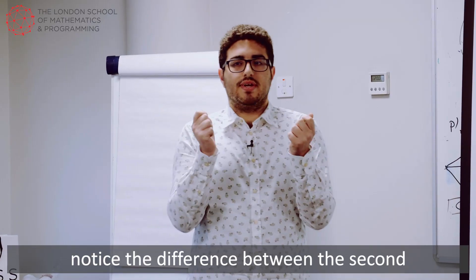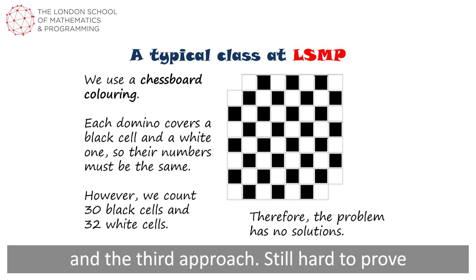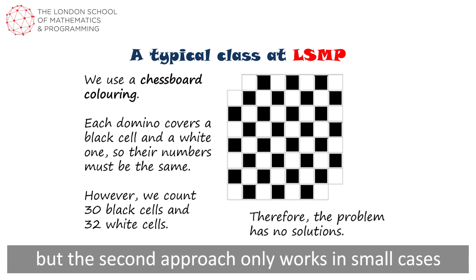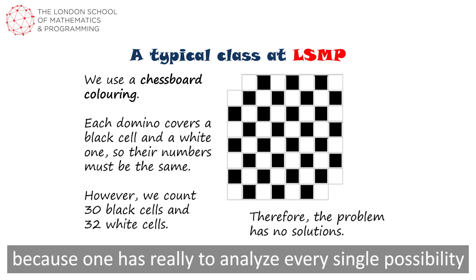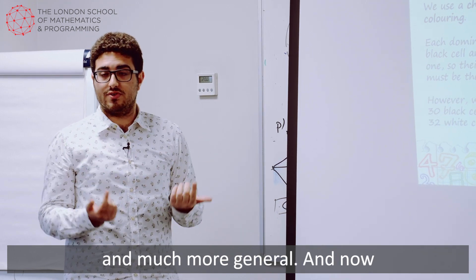And again, notice the difference between the second and the third approach. They still are a proof. But the second approach only works in small cases. Because one has really to analyze any single possibility. While this approach is abstract and much more general.